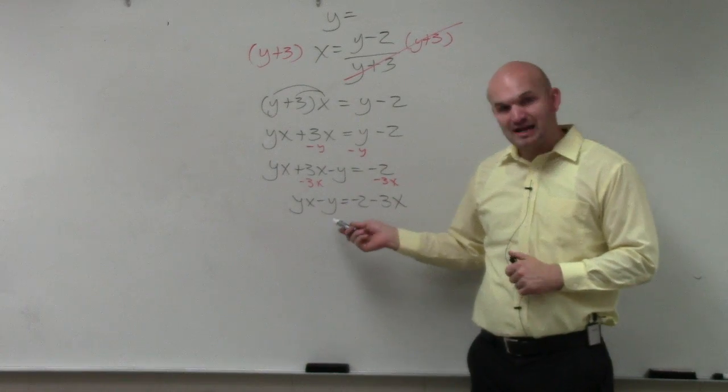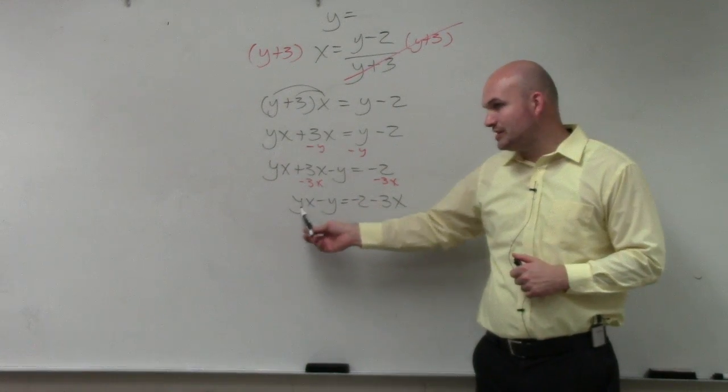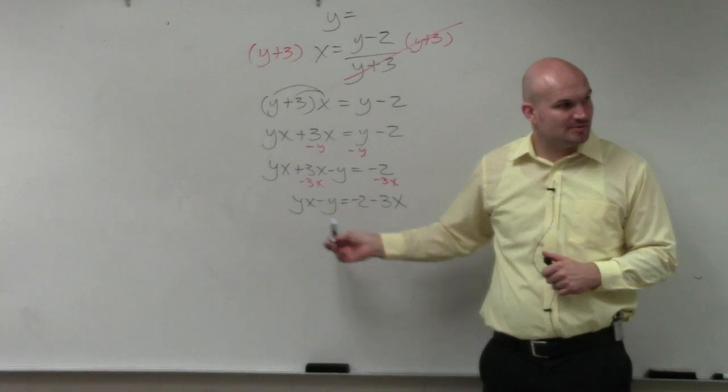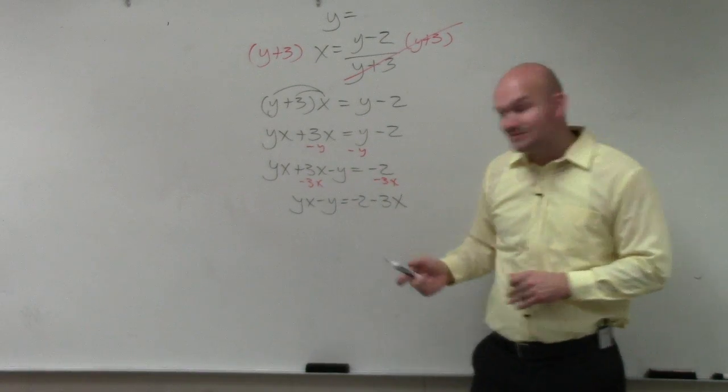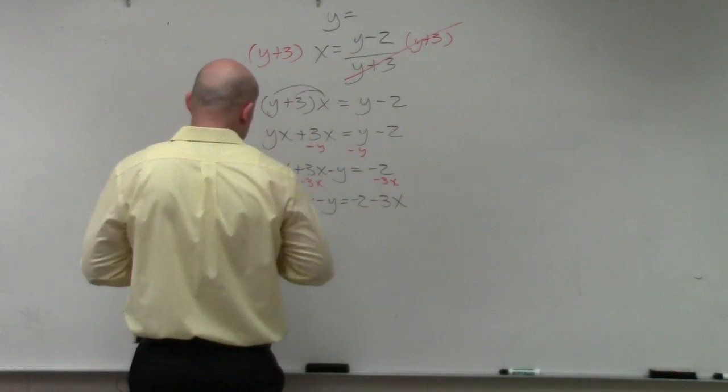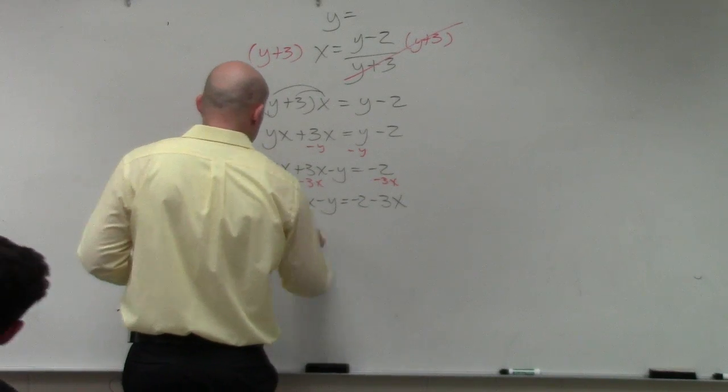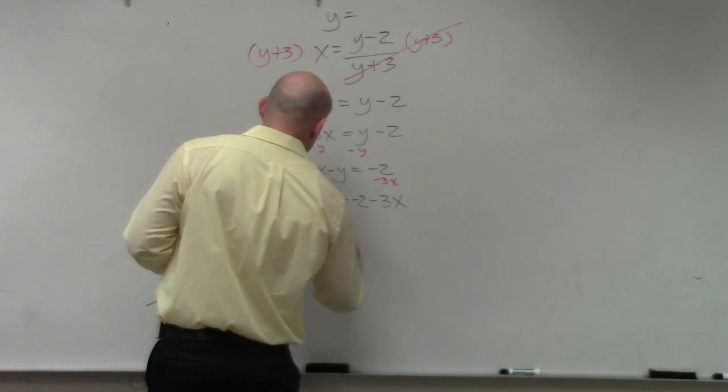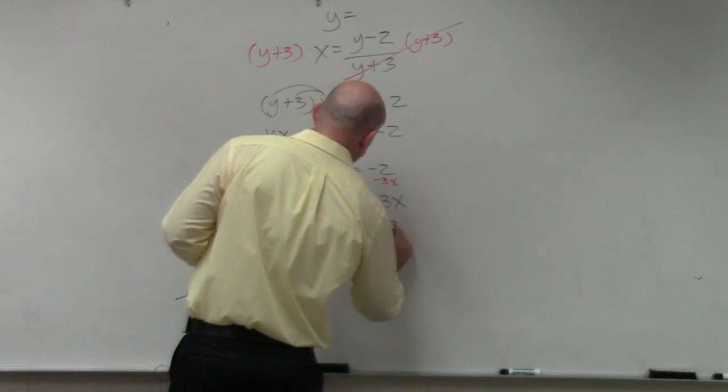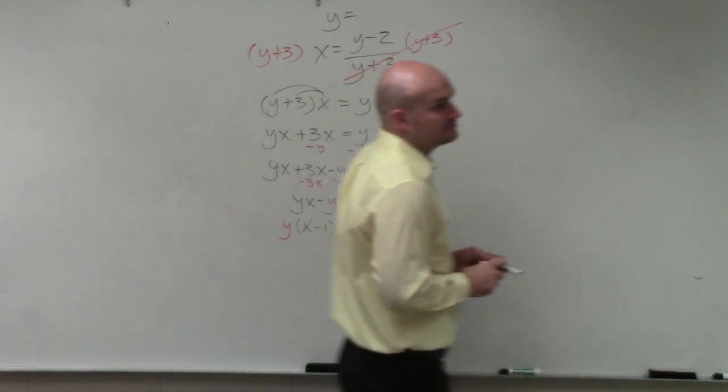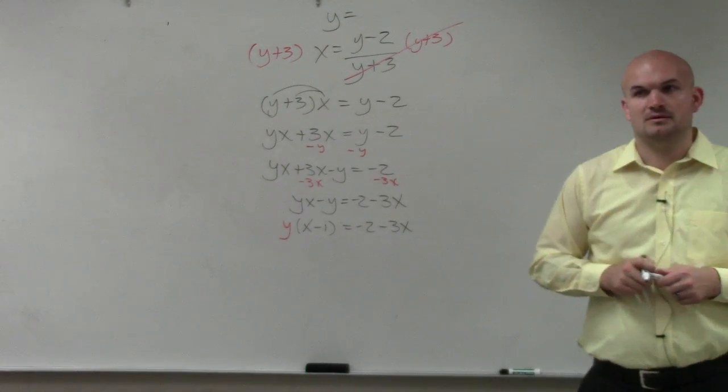But we can factor it, right? Wouldn't you agree that both of these terms share a y? So you can factor out the y. When you factor out the y, you're left with y times x minus 1 equals negative 2 minus 3x.